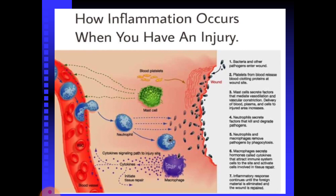The cardinal signs of inflammation reflect three major events of an inflammatory response. When bacteria and other pathogens enter a wound, platelets from the blood release blood clot proteins at the wound site. Mast cells secrete factors that mediate vasodilation and vascular permeability, increasing delivery of blood plasma and cells to the injured area. Neutrophils secrete factors that kill and degrade the pathogen, while neutrophils and macrophages remove pathogens by phagocytosis. Macrophages also secrete cytokines that attract immune system cells to the site and activate cells involved in tissue repair. The inflammatory response continues until the foreign material is eliminated and the wound is repaired.